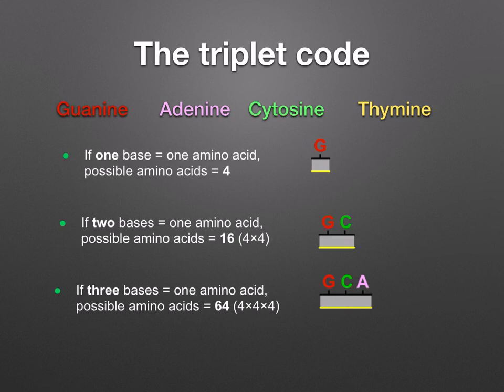If you use a pair of bases, for example guanine and cytosine, or guanine and thymine, how many different amino acids would you get? You'd only get 16. This is still inadequate. If you use a triplet of bases, for example guanine, cytosine, and adenine, this will produce 64 different codes, which is more than enough to satisfy the requirements of 20 amino acids.